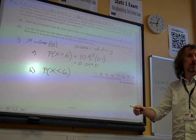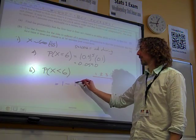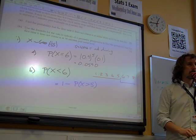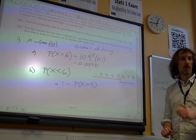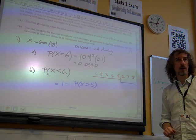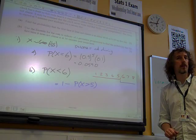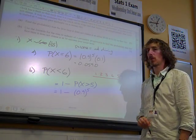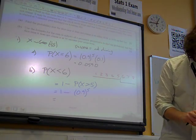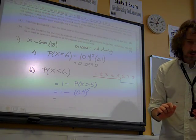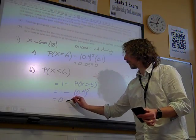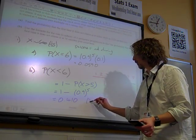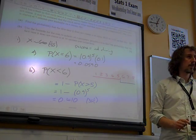When this question said that the probability of x being less than 6, it's also saying 1 minus the probability that x is greater than 5. And greater than 5 can only happen if we have 5 failures. So, that is 1 minus 5 failures. 1 minus 0.9 to the 5 gives us 0.4095, or 0.410 if we're doing it to the 3 significant figures. Brilliant.